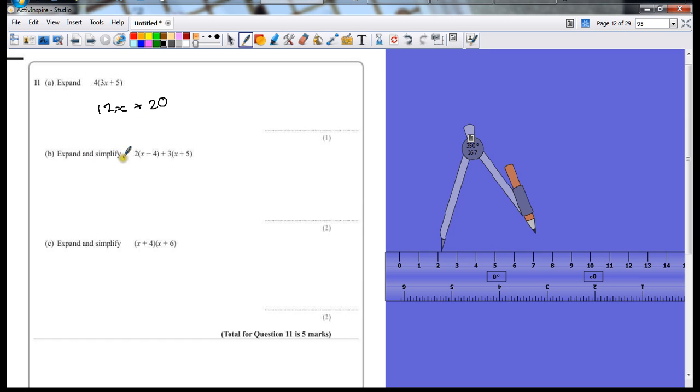Expand and simplify. So again, 2 marks this time. We'll get a mark for expanding properly. So multiply each bracket out separately, bearing in mind that this is going to give us a separate calculation.